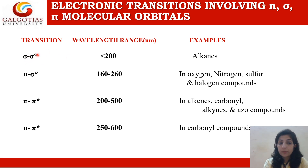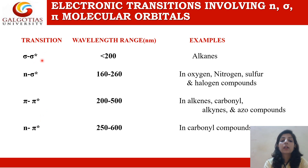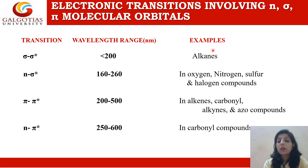Sigma star refers to the excited state, which is the non-bonding orbital, while sigma is the bonding orbital in the ground state. The sigma to sigma star transition, occurring in single bond containing compounds, occurs at a wavelength range of less than 200 nanometers. Examples include alkanes.